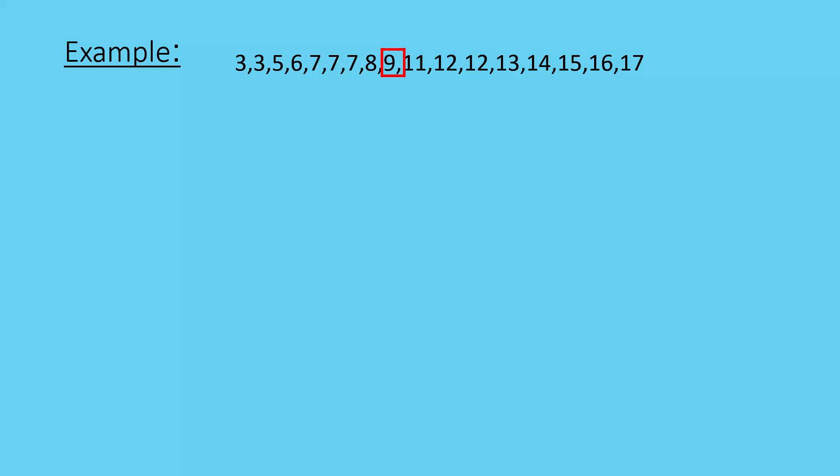If I look on either side of this number 9, I have 8 numbers before it and 8 numbers after it, which means that I have found the number precisely in the middle. This is my median. My median is actually referred to as Q2.